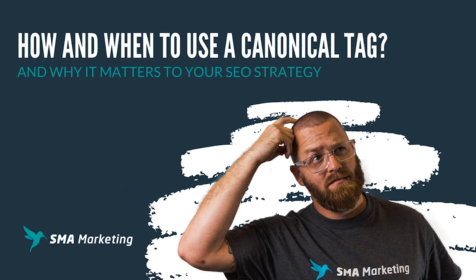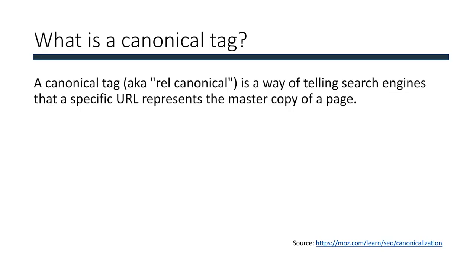So let's talk about the canonical tag — what does it mean and why it matters to SEO. A canonical tag, also known as rel canonical, is a way of telling the search engines that a specific URL on your site is the main copy or the master copy of a page. You might have a number of pieces of content that talk about a specific topic, but you want to designate one as the authoritative piece — the one you want to rank for that targeted keyword. This is where the canonical tag comes in, and it's extremely important.